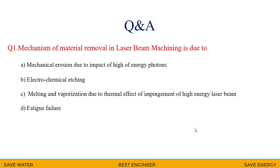Let me go for the question and answer. Mechanism of material removal in laser beam machining is due to: mechanical erosion due to impact of high energy of photons, electrochemical etching, melting and vaporization due to thermal effect of impingement of high energy of laser, or fatigue failure. Let me see the answer. Answer is C. Melting and vaporization due to thermal effect of impingement of high energy laser beam. This is the way of removing the material in laser beam.